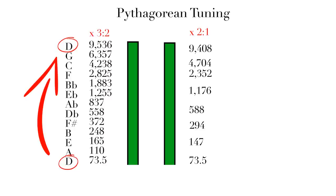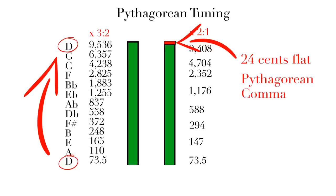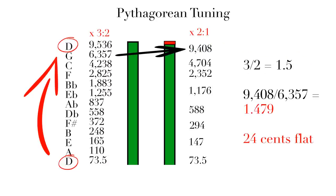We call this discrepancy the Pythagorean Comma. This Pythagorean Comma means that the last fifth is no longer perfect. We call it a Wolf Fifth, because it's so out of tune it seems to be howling. This is a large part of the reason that this system is no longer used.